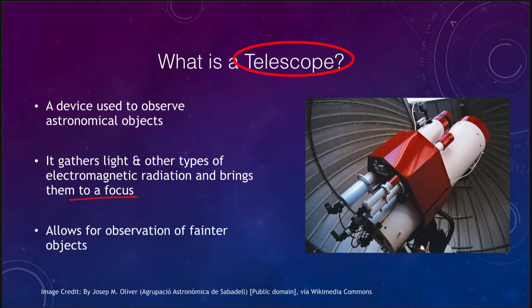A telescope enlarges the collecting area, allowing us to see fainter objects — things fainter than we would be able to see with our eyes. Earlier, before the development of the telescope in the early 1600s, everything was done just visually. Once we developed a telescope, we had ways of observing fainter objects that we would not be able to see at all.